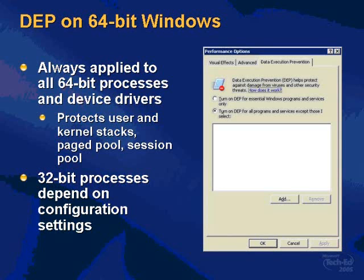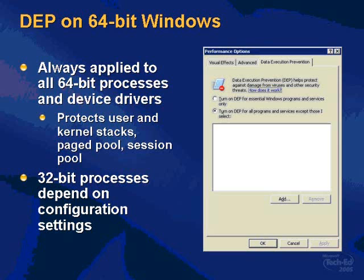DEP on a 64-bit Windows system applies to all 64-bit processes. Microsoft has basically said with 64-bit Windows, if you're going to move to 64-bit, we're starting from scratch — leaving the legacy stuff behind because you're going to have to recompile your code to be 64-bit anyway. You can still run 32-bit code on 64-bit Windows, but Microsoft gives you the opportunity to control the data execution protection behavior for those applications.